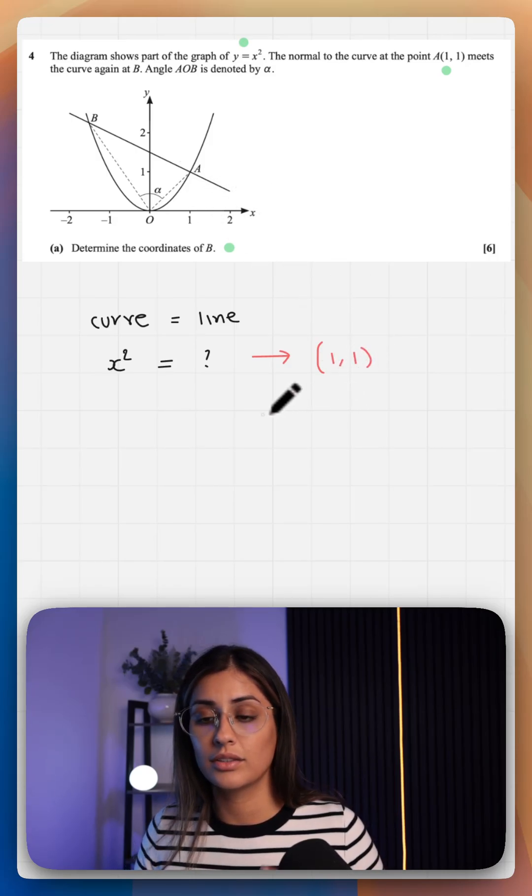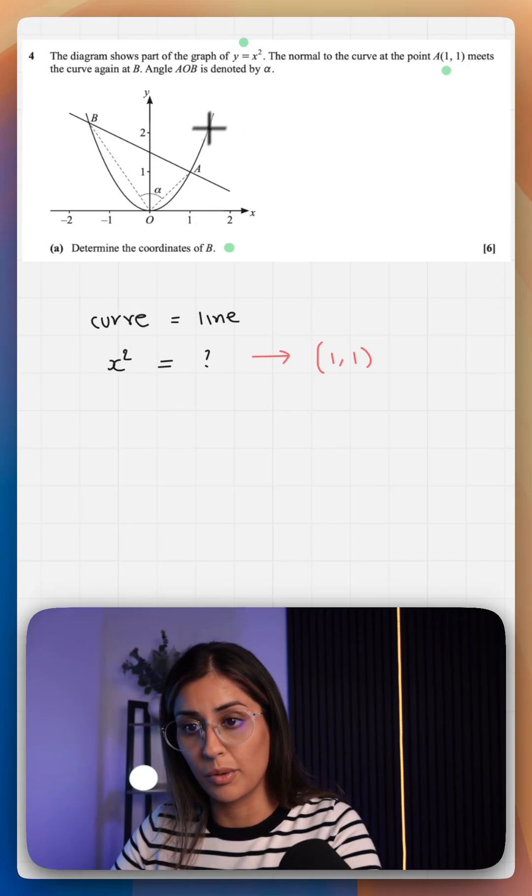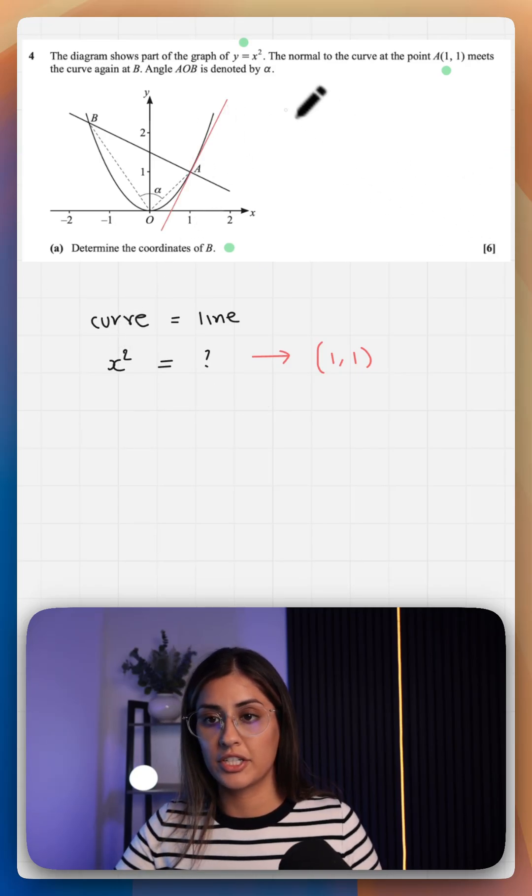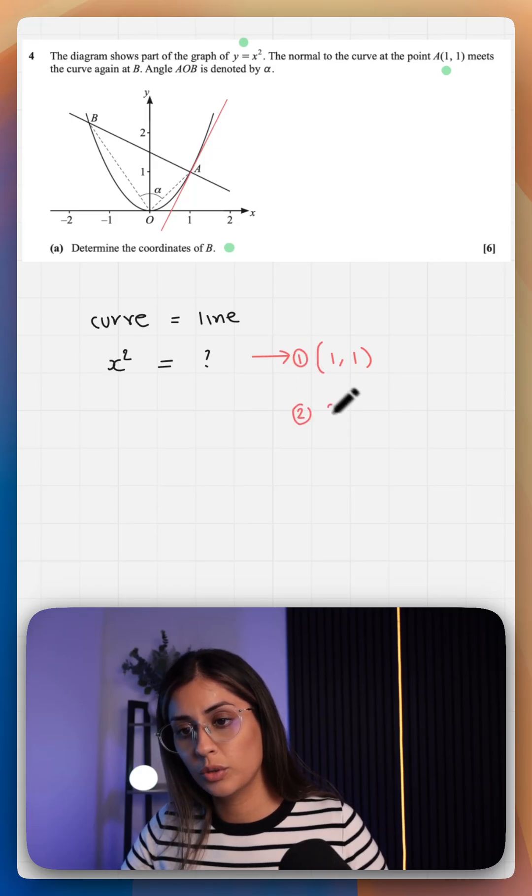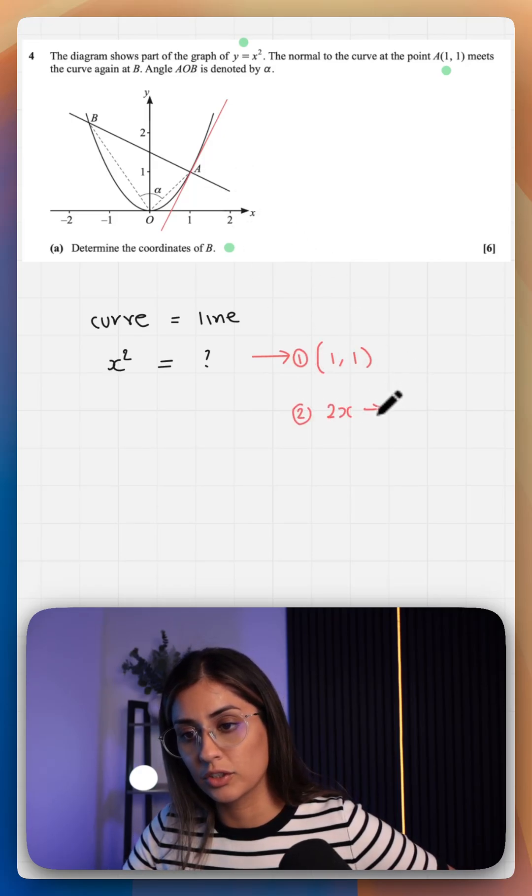The second thing we need is a gradient. The gradient of the tangent at this point can be calculated by differentiating. So that is 2x. And then if we plug in x is 1, that gives us 2.